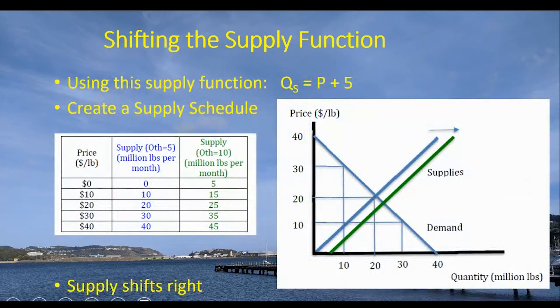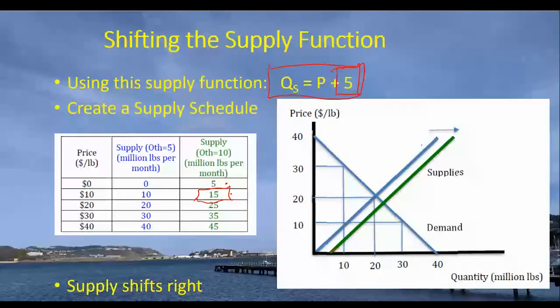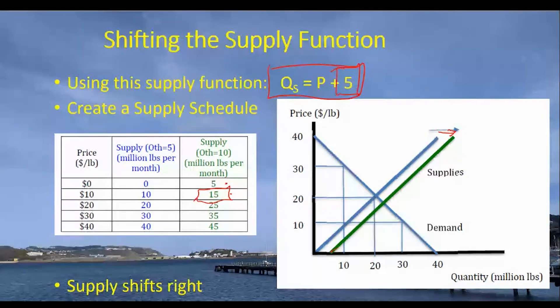And then when we plot it, it's going to look like this. Plotting this particular supply function next to the original. And we'll notice that now with that supply function, plug in a price of 0, we get a supply of 5 units. Plug in a price of 10, we're going to get a supply of 15 million pounds and so forth. And we can plot that given by the green line over here and note that it's going to be positioned to the right of the original supply function.